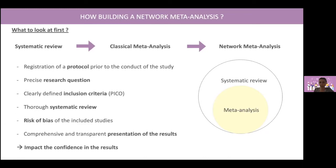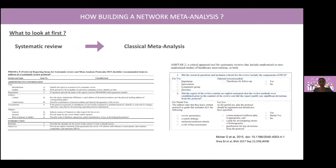These elements are essential when preparing and performing a network meta-analysis, and will impact the confidence in the results. To help the author conduct such methods, you could consult two different checklists: the PRISMA checklist for good reporting of systematic reviews and meta-analyses, and AMSTAR, which helps you assess the quality of the meta-analysis.